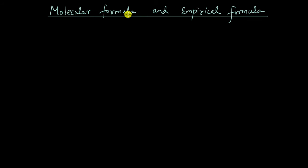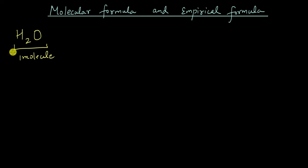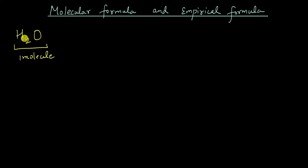In this video, let us talk about molecular formula and empirical formula. A molecular formula tells us the exact number of atoms in one molecule of any compound. For example, in the case of water, H2O, this tells me that there are two atoms of hydrogen and one atom of oxygen in one molecule of water. So this formula is giving me the exact information of the number of atoms. This is a molecular formula.